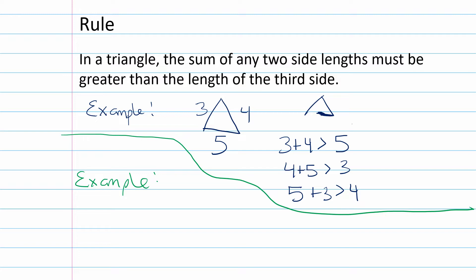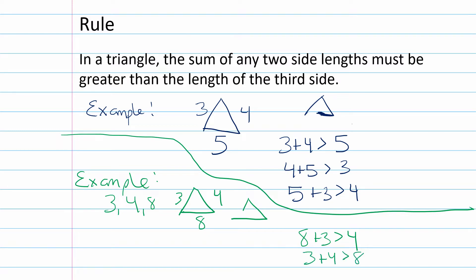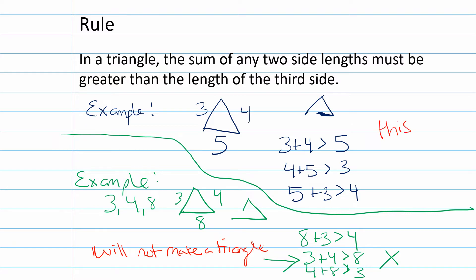Let's try a different example: sides 3, 4, and 8. Will it make a triangle? Is 8 plus 3 greater than 4? Yes. Is 3 plus 4 greater than 8? No. Is 4 plus 8 greater than 3? Yes. Because this one part is not correct, sides 3, 4, and 8 will not make a triangle.